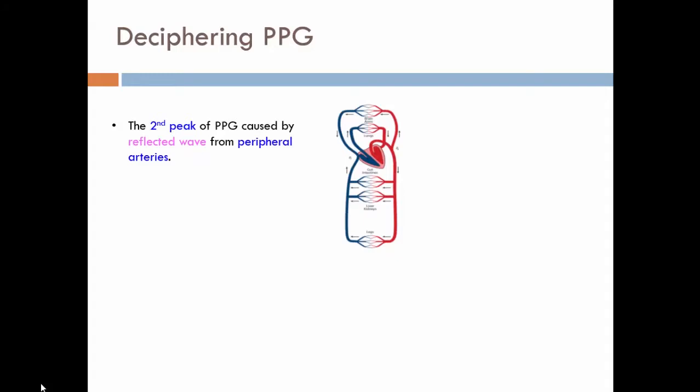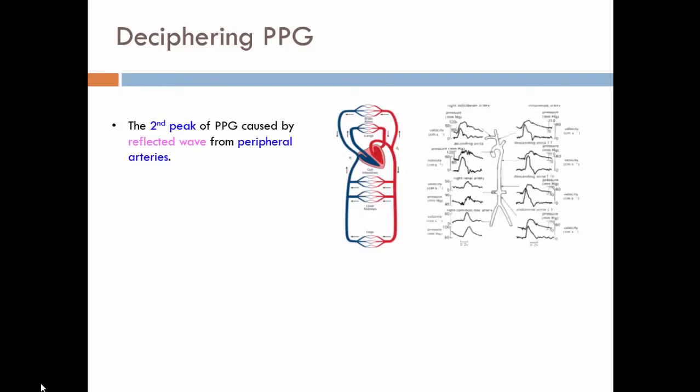So before doing anything about the big data analysis, let's try to find out why we can use one single PPG signal to establish the model for estimating the blood pressure. Because if you try to read the characteristic of PPG, the second peak of PPG is actually caused by the reflected wave from peripheral artery.